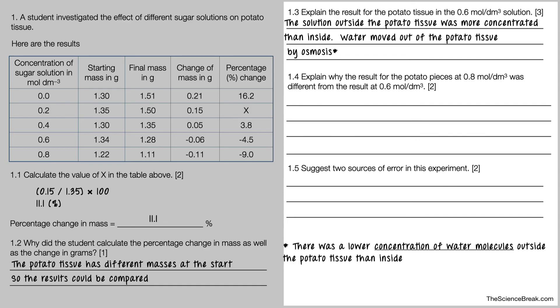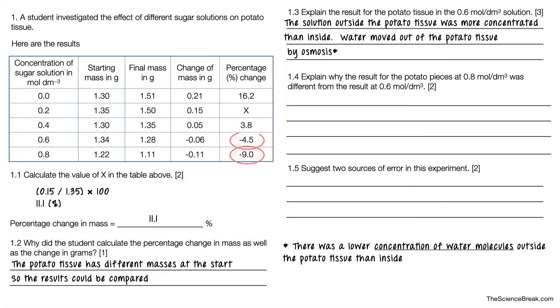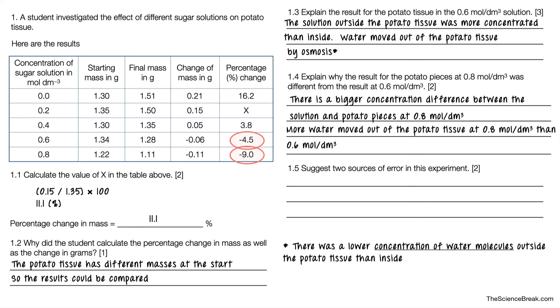Question 1.4 says explain why the potato pieces at 0.8 mol/dm³ was different from the result at 0.6 mol/dm³. We're looking at these two results here. Why was there a bigger loss in mass for the 0.8 compared to the 0.6? The reason for that is there's a bigger concentration difference between the solution and the potato pieces at 0.8 mol/dm³. This means more water moved out of the potato tissue at 0.8 mol/dm³ than 0.6, so we have a bigger loss in mass and therefore a bigger negative number.